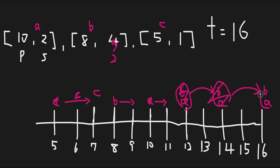A and B reach the goal, and the only remaining car is C. C moves 1 each step and eventually reaches the goal at 16. A single car is also a car fleet, so in this case the number of car fleets is 2.